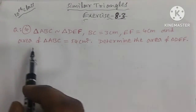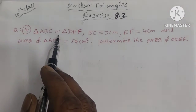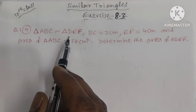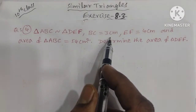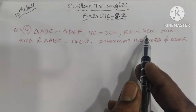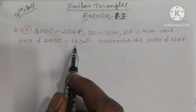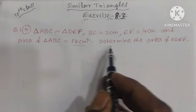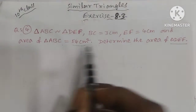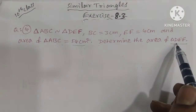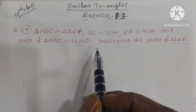Question number 4: Triangle ABC is similar to triangle DEF. BC is equal to 3 cm, EF is equal to 4 cm, and area of triangle ABC is equal to 54 cm². Determine the area of triangle DEF. This is a very simple question.